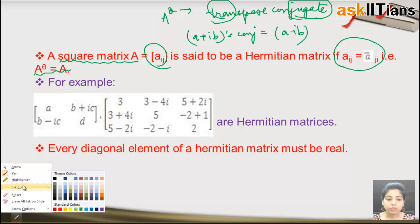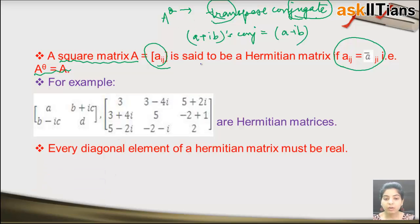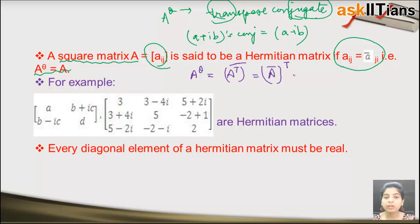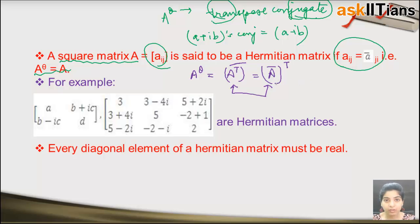To find A^θ, you either calculate the transpose first and then take the conjugate, or you take the conjugate first and then the transpose. One important point: these two operations always give equal results, so the order does not matter.